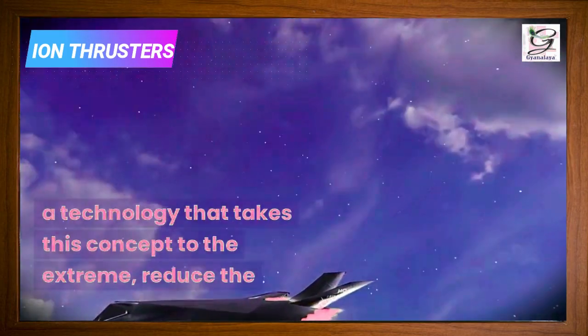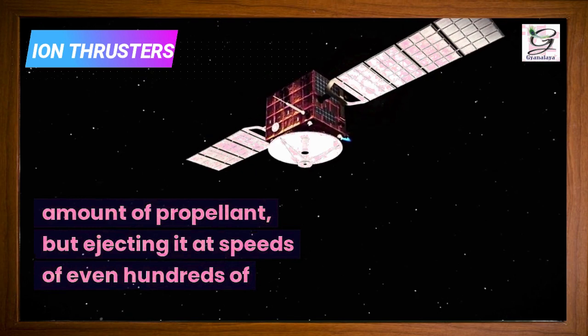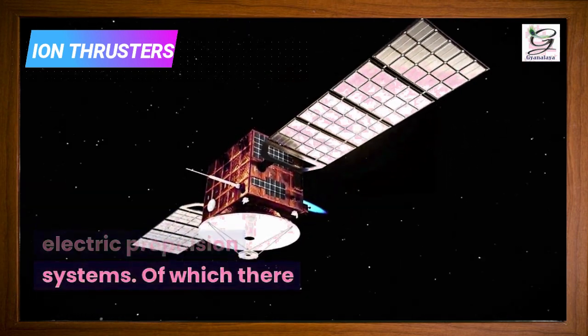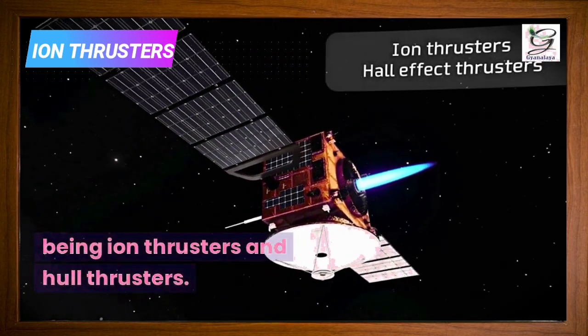Understanding this, there is the technology that takes this concept to the extreme, reducing the amount of propellant but ejecting it at speeds of even hundreds of kilometers per second. I am talking about electric propulsion systems, of which there are several types, the most widely used today being ion thrusters and Hall thrusters.